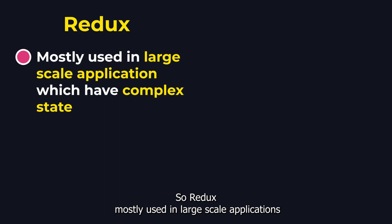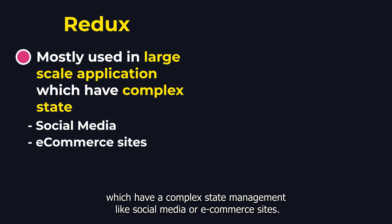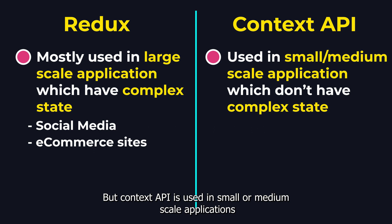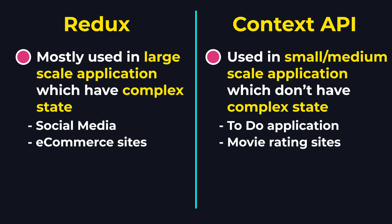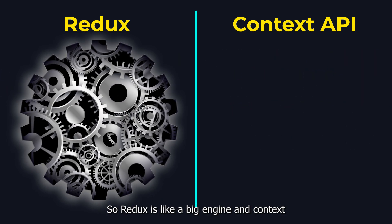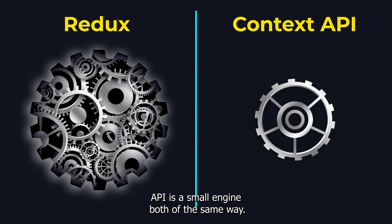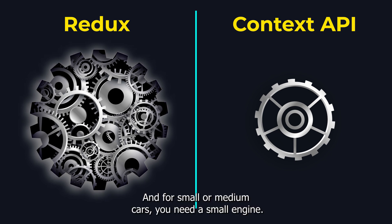Redux is mostly used in large scale applications which have complex state management, like social media or e-commerce sites. But Context API is used in small or medium scale applications which don't have complex states, like a todo application or movie rating sites. So Redux is like a big engine and Context API is a small engine — both work the same way, but for some big cars you need a big engine and for small or medium cars you need a small engine.